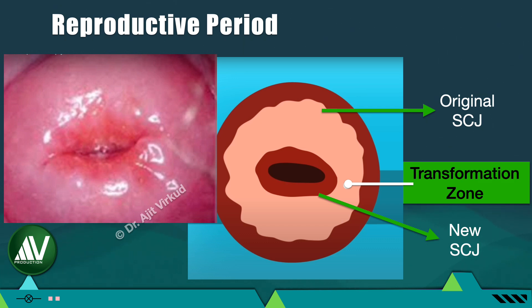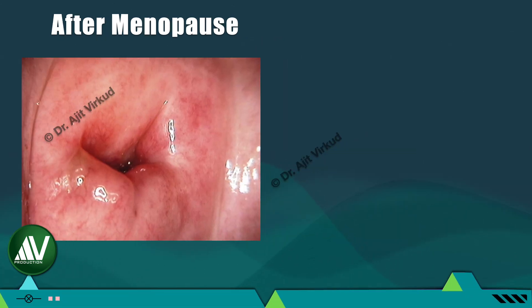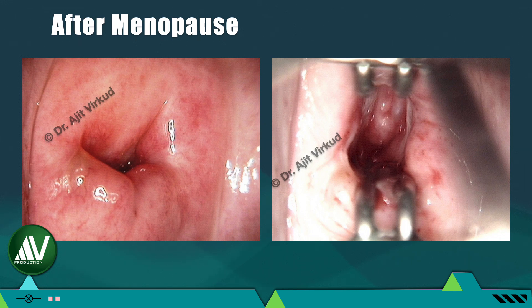The reason this area is important from the colposcopy point of view is that it is a site of enhanced cellular activity and is therefore prone to develop squamous cell carcinoma. After menopause, due to lack of estrogen, the new squamo-columnar junction often recedes into the endocervical canal and is not visible even on colposcopy, even after eversion of the cervical lips with a special endocervical forceps.